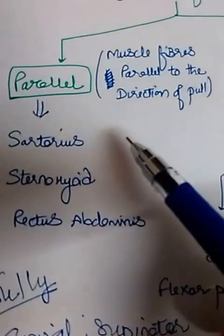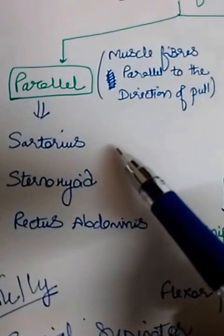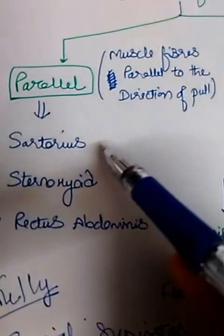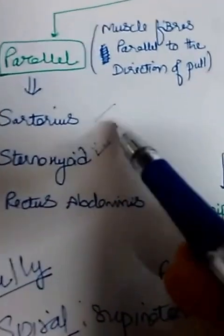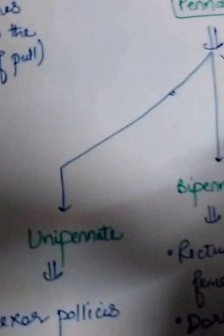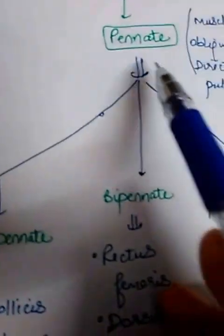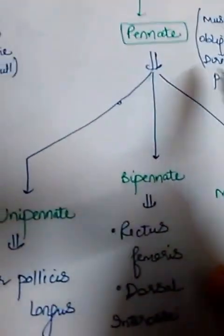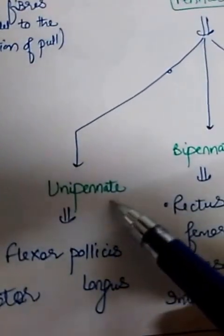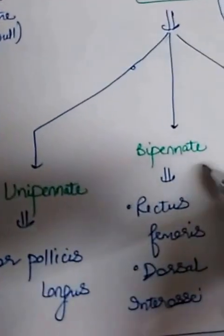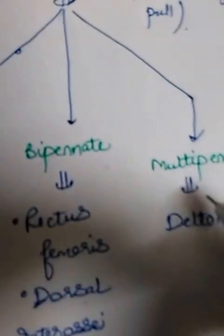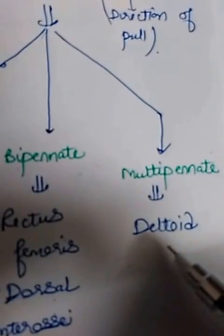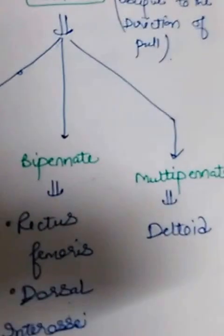Examples of parallel muscle fibers are sartorius, sternohyoid, and rectus abdominis. Among these, sartorius and sternohyoid are strap muscles. Pennate muscles are divided into three types: unipennate — example flexor pollicis longus; bipennate — examples rectus femoris and dorsal interossei; and multipennate — example deltoid.